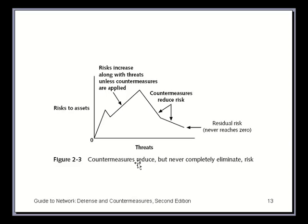Here's a graph plotting risk to assets versus threats. With zero probability of a threat, there's no risk to our assets. As the probability of threats increases, there's greater risk. Once we apply our countermeasures, that reduces our risks by defending our infrastructure. But notice this never goes to zero — there's always residual risk because there's no way to have 100% security.